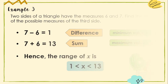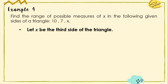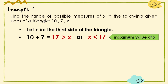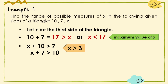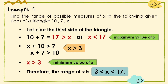Moving on to example number 4: find the range of possible measures of X given sides 10, 7, and X. Adding 10 and 7 gives 17, so X < 17 (maximum value). The other two inequalities are X + 10 > 7 and X + 7 > 10. To satisfy both, X must be greater than 3 (minimum value). Therefore, the range of possible measures is: 3 < X < 17.